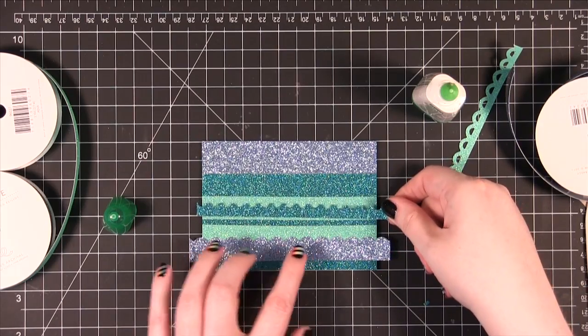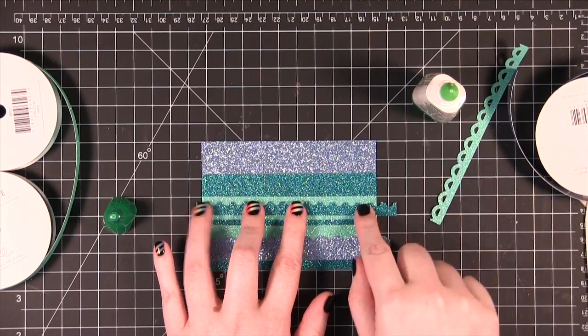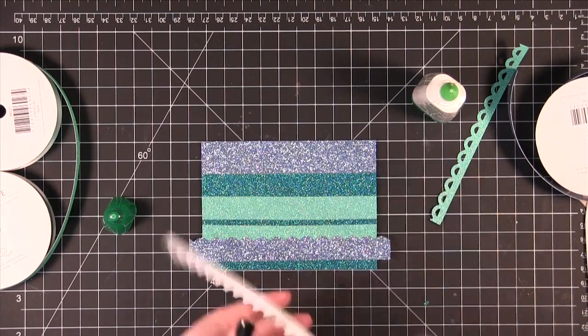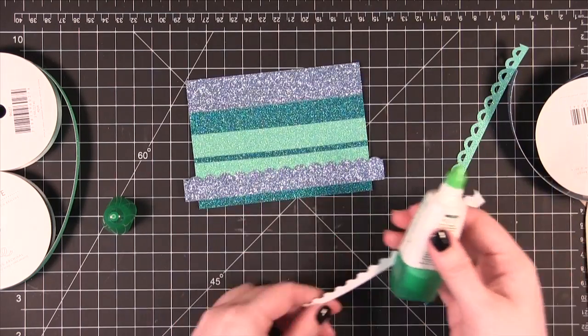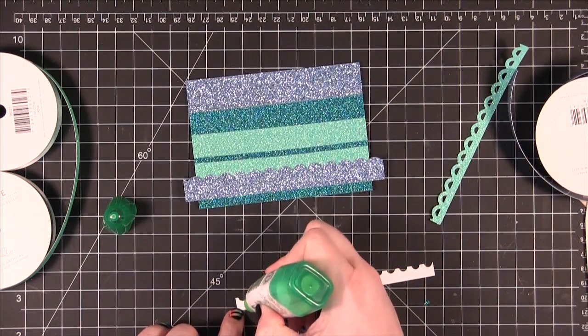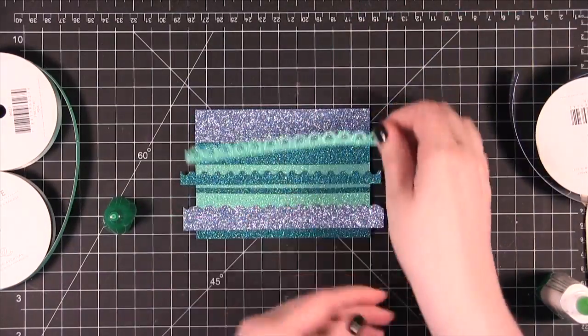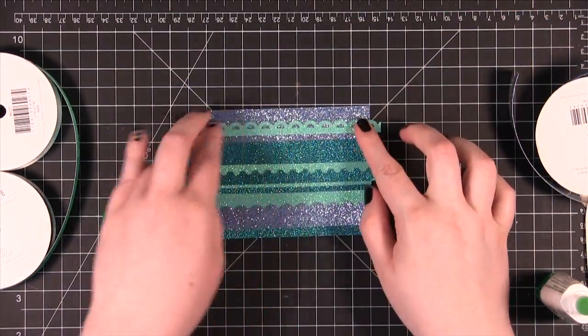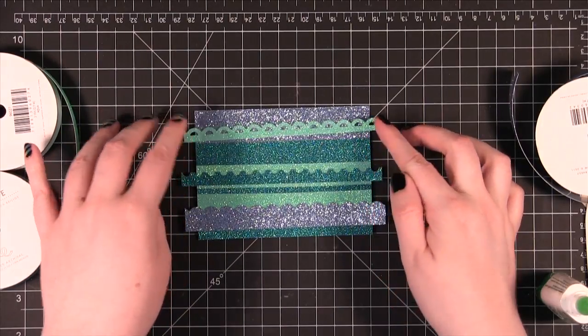Alright this piece is going to go right up in here in the center just like that. So I'm going to put some glue on the back of this one as well. Alright and then I'm going to put this little piece right here. I'm going to put it up here at the top to kind of mix those colors in a little more.